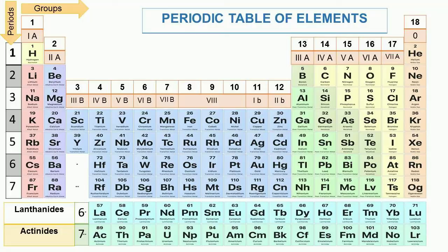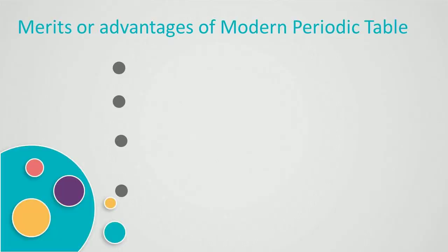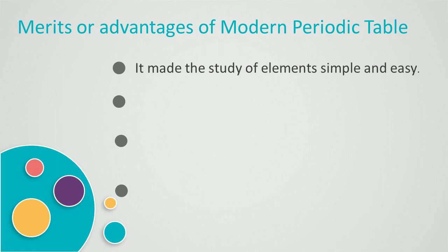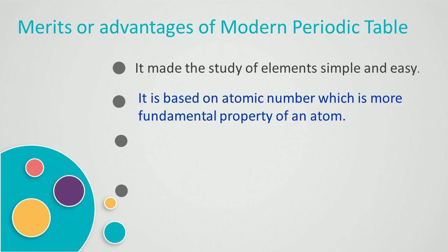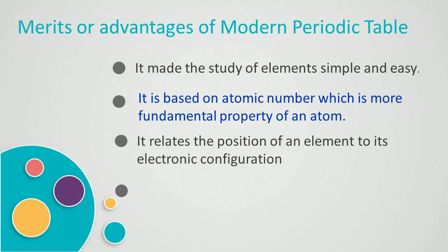Now let's know about some of the main advantages or merits of the modern periodic table. The first advantage is that it simplified the study of elements as it is easy to remember and reproduce. The second merit is that it is based upon atomic number, which is a more fundamental property of an atom. It relates the position of an element to its electronic configuration.